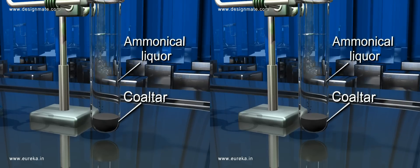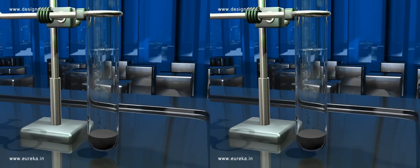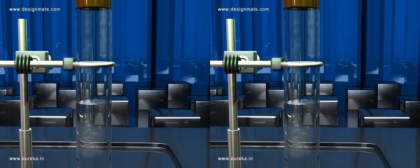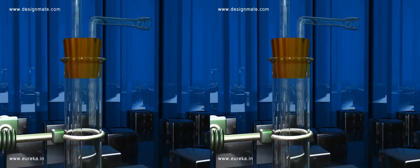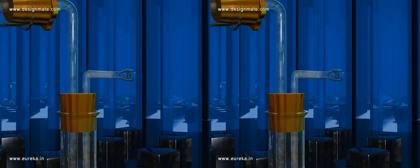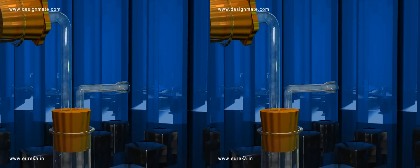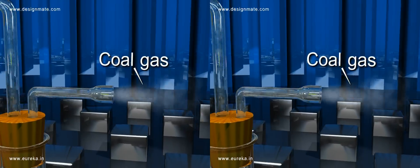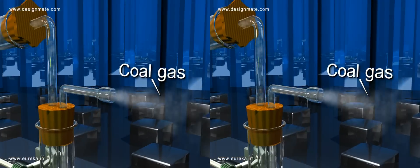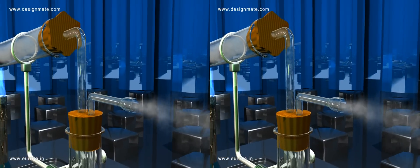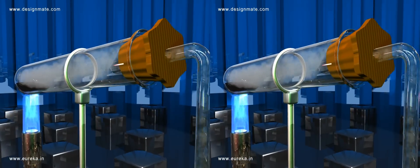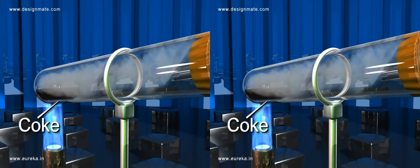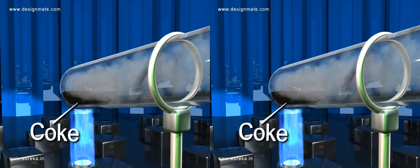Lastly, the unreacted vapors are released through the outlet of this tube, called coal gas, which is combustible. The material left behind in the horizontal tube is called coke.